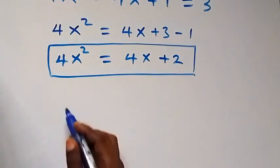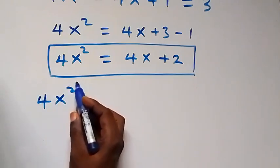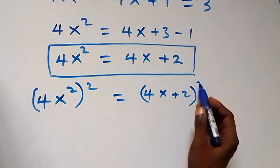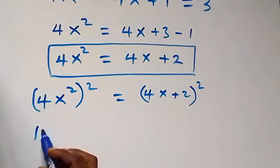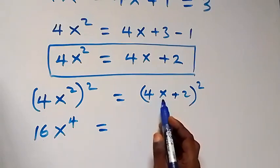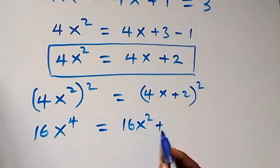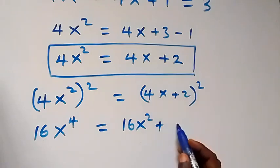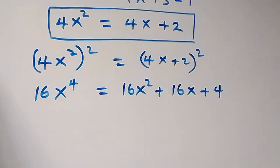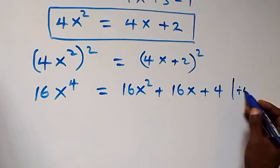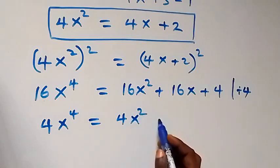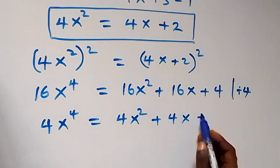From this equation we can continue. We square both sides: (4x²)² equals (4x plus 2)². This gives 16x⁴ equals the expansion of (4x plus 2)² — that is 16x² plus 16x plus 4. Since 4 is common we divide through by 4, and this becomes 4x⁴ equals 4x² plus 4x plus 1.